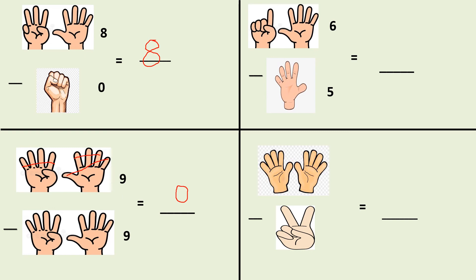Now let's come to the next picture. How many fingers are open? One, two, three, four, five, six — I have written six over here. And in this picture how many fingers are open? Five. It means out of six fingers, I have to remove five fingers. So let's cut and remove all these five fingers. We are left with how many fingers open? One. Very good. We are left with one finger open and my answer would be number one.